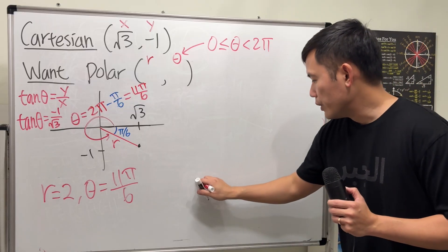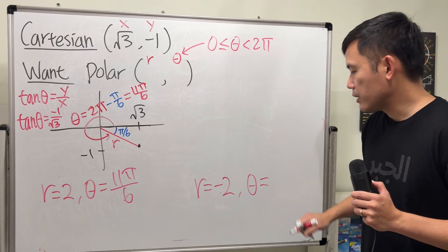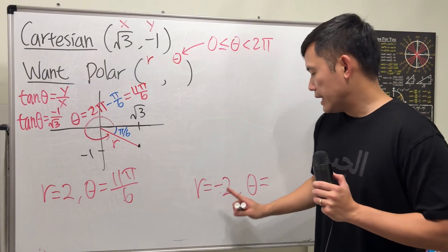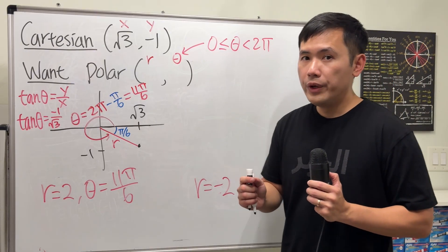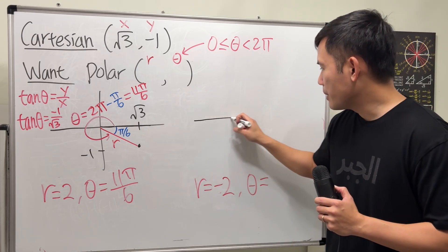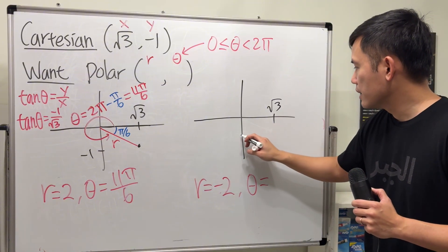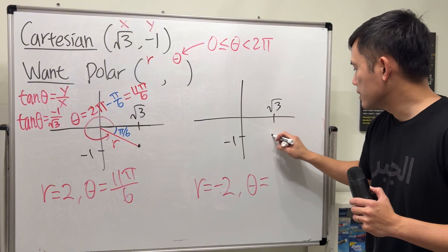Now for the second answer, we need to have negative 2 for the r, and then figure out the angle. Remember, negative r means that we go backwards. So if you look at the picture, here is √3, here is -1, so this is the point that we want.